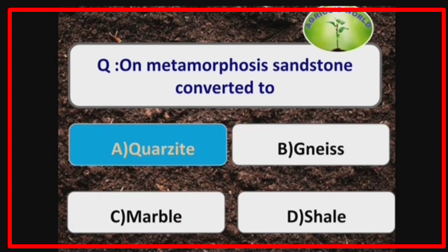On metamorphosis, sandstone is converted to quartzite, shale is converted to slate, granite is converted to gneiss, and limestone is converted to marble.